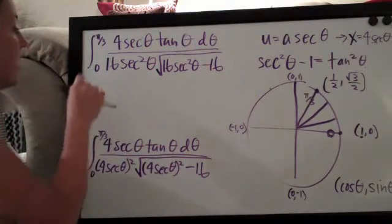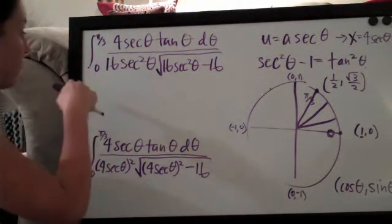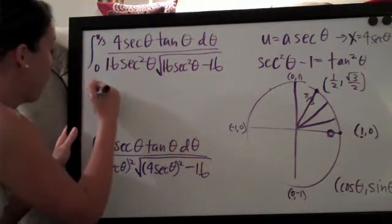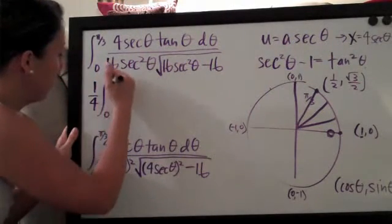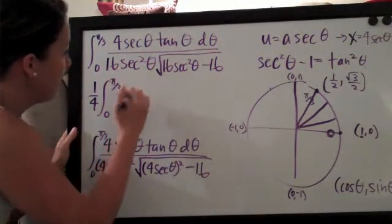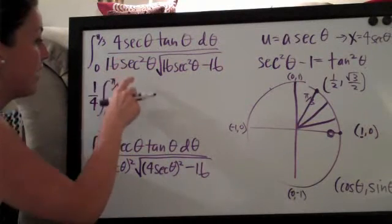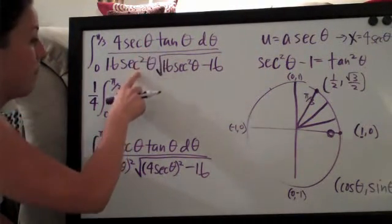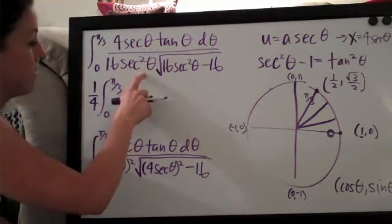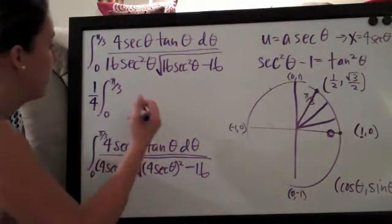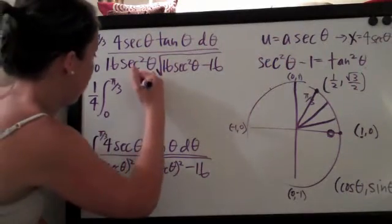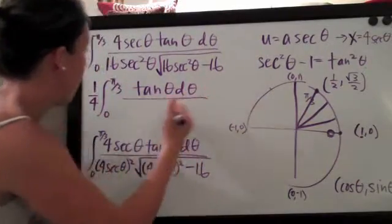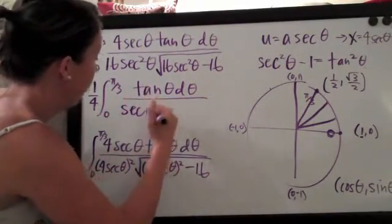Now let's pull the four over sixteen out in front. Four over sixteen is the same as one over four, so we've got one-fourth out in front times the integral on the range zero to pi over three. I'm also going to cancel out one secant theta. I've got secant theta on top and on the bottom, so the one on top goes away and since the one on the bottom is squared, I'm left with the one on the bottom — so I'll just have tangent theta d theta over secant theta.